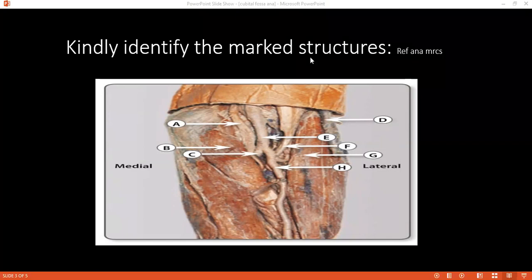Can you tell me the boundaries of cubital fossa? Superolaterally, there is brachioradialis, medially pronator teres. And roof is formed by skin, superficial and deep fascia, floor is formed by brachialis muscle. Okay, good.